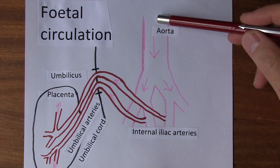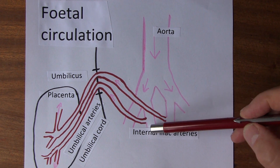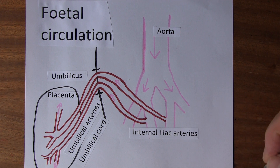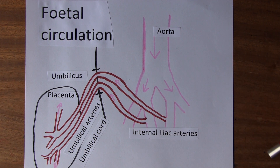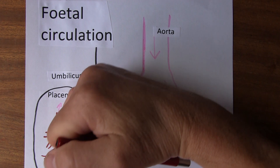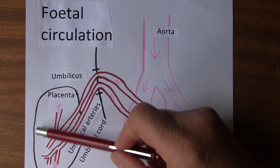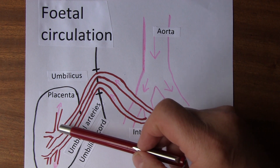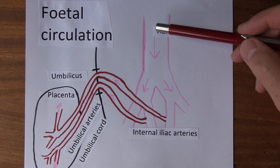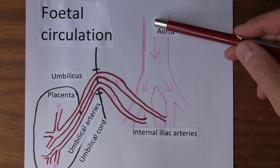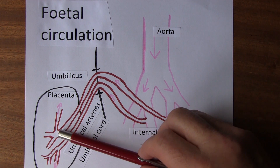Blood from the foetal aorta comes down, dividing into the iliac arteries, and here we have the internal iliac arteries. The umbilical arteries arise from the foetal internal iliac arteries — one from the right, one from the left — and these take arterial blood to the placenta. It's arterial because it's moving away from the foetal heart. In the placenta, it picks up oxygen and nutrients, and gives up carbon dioxide and waste products that go away in the mother's circulation. This is shown in pink because it's mixed oxygenated and deoxygenated blood going to the placenta, where it becomes more highly oxygenated.